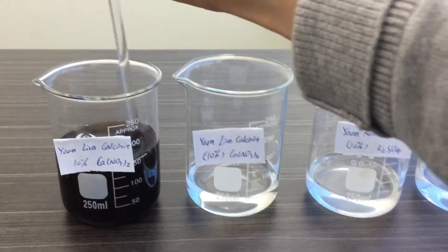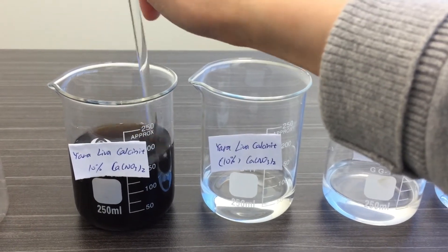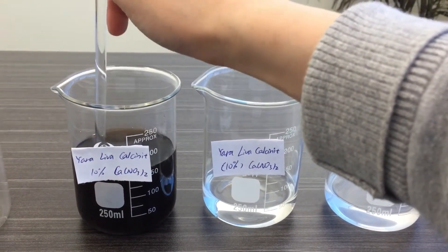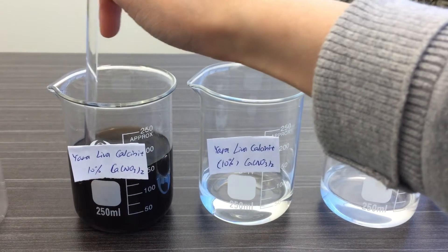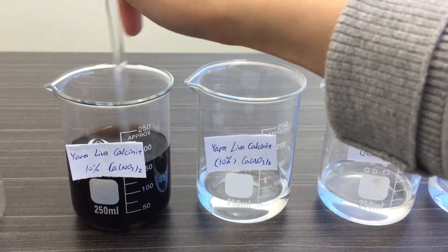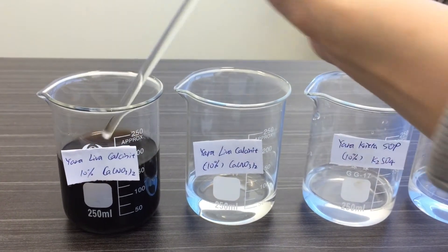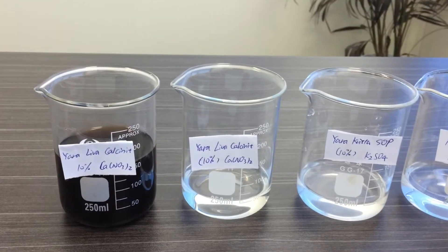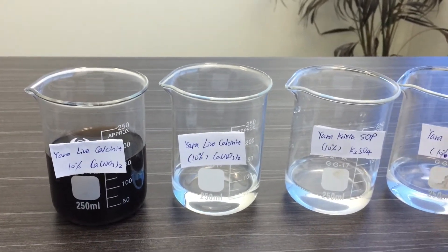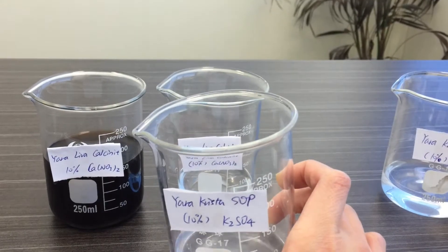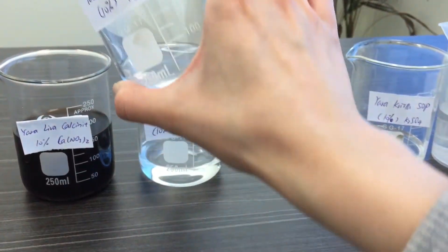I'm going to use a stirrer to stir it thoroughly so that the polysaccharide is able to chelate the calcium ions, and then I'm going to take one beaker of potassium sulfate and pour it into this solution.